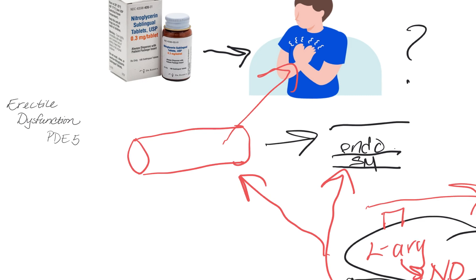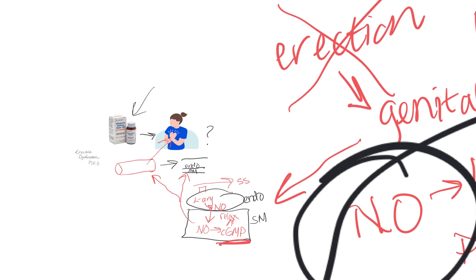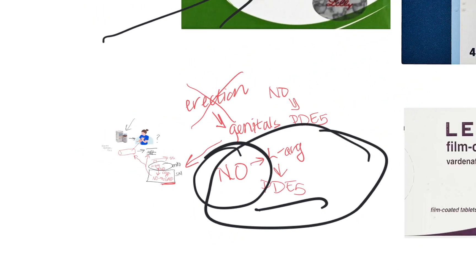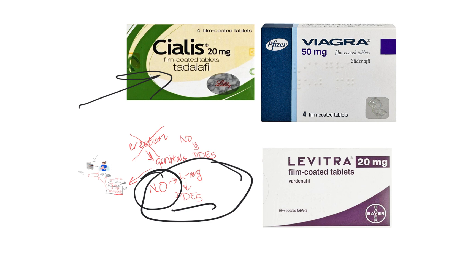So pharmacology friends, that is my mechanism of action for these medications used to treat erectile dysfunction known as the class of PDE5 inhibiting medications. Hopefully you all learned something. I hope you did. Stay smart, everybody.